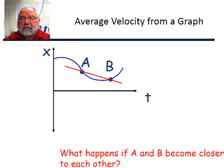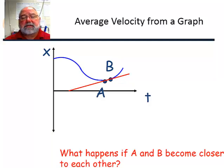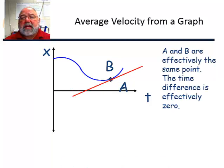Okay, A is closer. Notice the slope has changed. Moved it again. Slope has changed a little bit more. Oh, it's changed quite a bit. So it's gone from having a negative slope to having a positive slope. And now when point A and point B are effectively the same point, the time difference is essentially zero. We call this taking a limit.